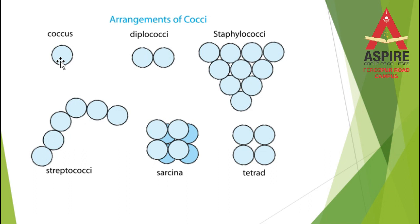An important exam question is the difference between streptococcus and staphylococcus. Streptococcus is a straight chain of bacteria in the form of beads, while staphylococcus is an irregular cluster of bacteria in grape-like form. Students must clearly remember this difference, as short questions about these arrangements are very common in exams.